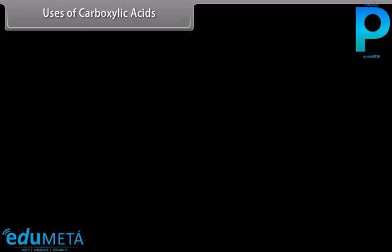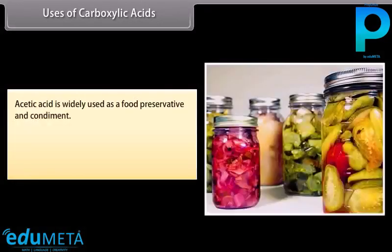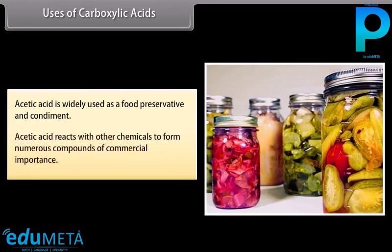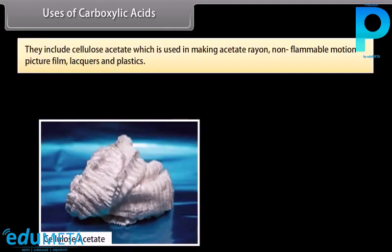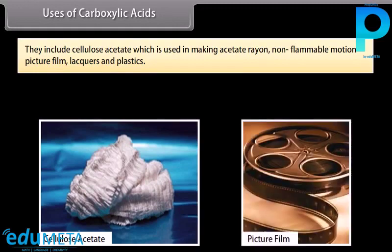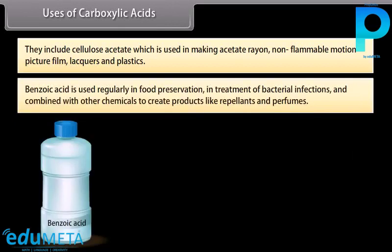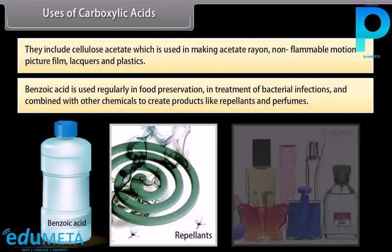Uses of carboxylic acids: acetic acid is widely used as a food preservative and condiment. Acetic acid reacts with other chemicals to form numerous compounds of commercial importance, including cellulose acetate used in making acetate rayon, non-flammable motion picture film, lacquers, and plastics. Benzoic acid is used regularly in food preservation, in treatment of bacterial infections, and combined with other chemicals to create products like repellents and perfumes.